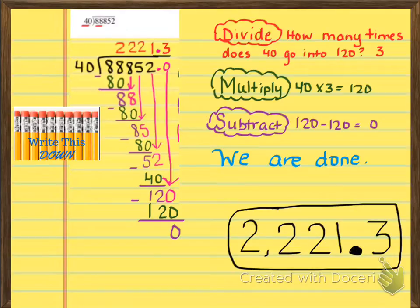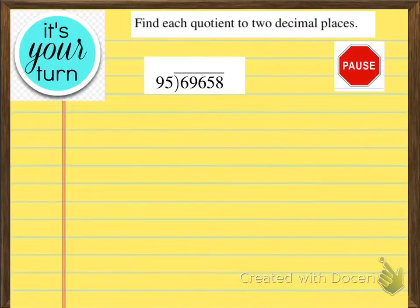So hopefully you are with me step by step. We are going to go ahead and I'm going to set you free on your own problem here. On your same paper in your composition notebook, I would like you to go ahead and complete this problem that you see here. 69,658 divided by 95. So I want you to show all of your work for this problem. You don't have to write the steps like I did on the right-hand side. But I do want you to show all of the work. So go ahead and pause the video now and do that, please.